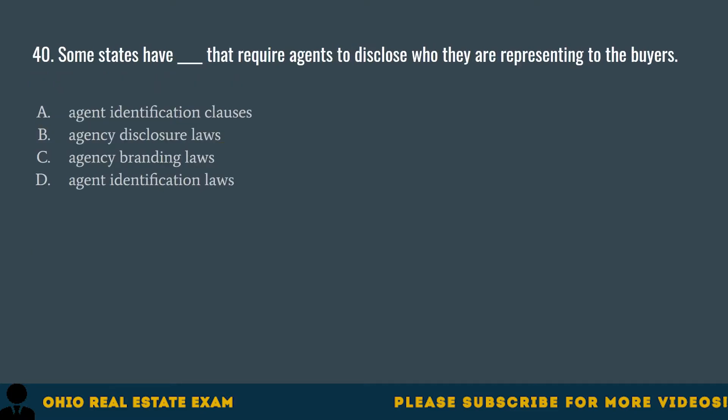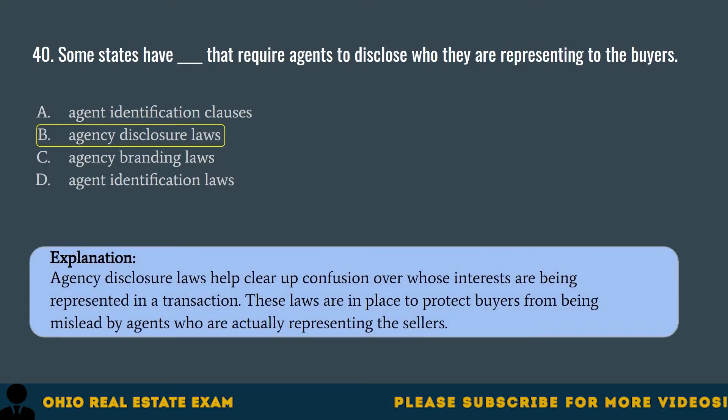Question 40. Some states have blank that require agents to disclose who they are representing to the buyers. A. Agent identification clauses. B. Agency disclosure laws. C. Agency branding laws. D. Agent identification laws. The correct answer is B. Agency disclosure laws. Agency disclosure laws help clear up confusion over whose interests are being represented in a transaction. These laws protect buyers from being misled by agents who are actually representing the sellers.